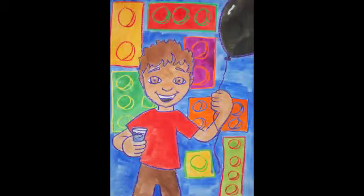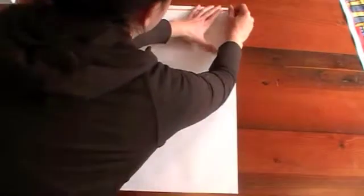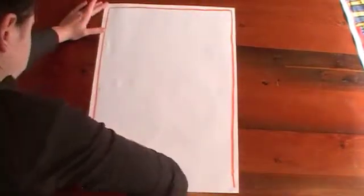This lesson is on states of matter where he's got a glass of water which is liquid, a balloon which is gas, and Lego blocks which is the solid element. So the first thing you do when you're doing an artwork is you do your border all the way around the edge. Okay, so we're going to draw the person.